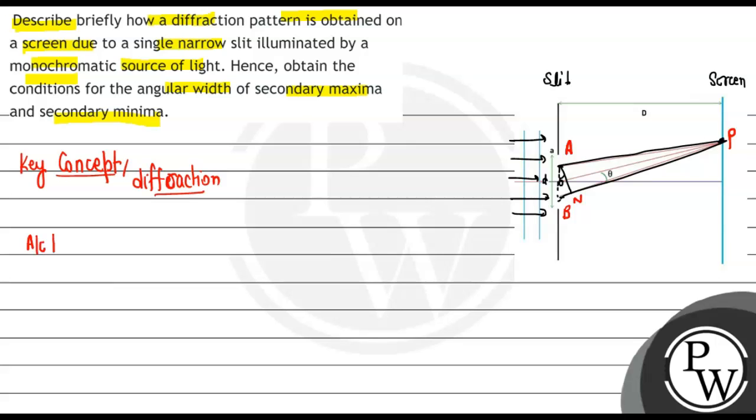So according to the diagram, the path difference BN will be AB sine theta. So BN, the path difference we got, is a sine theta.